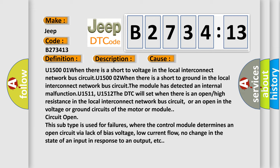U1511, U1512, the DTC will set when there is an open or high resistance in the local interconnect network bus circuit, or an open in the voltage or ground circuits of the motor or module.